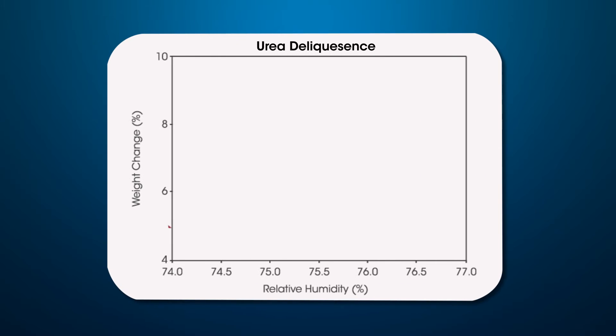When measured using 1% increments typical in competitive products, the accurate determination of the urea deliquescence point is compromised. Ramping the RH provides a higher level of resolution and a more accurate determination of the true deliquescence point.